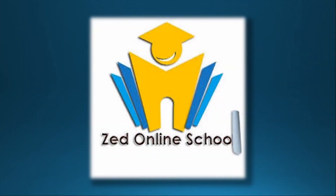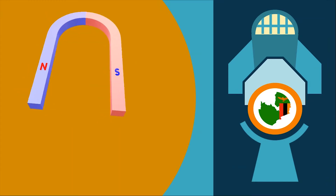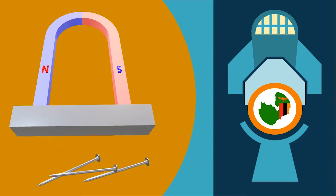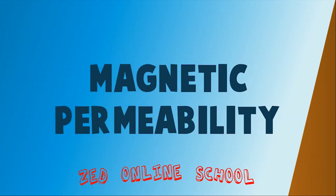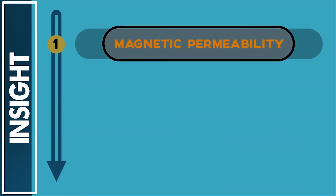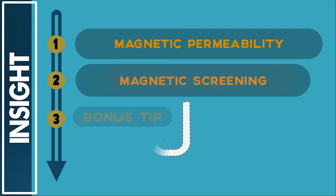Did you know that if certain materials are put in a magnetic field they can prevent other materials from getting attracted to the same magnetic field? This is Zed Online School and in this video we'll be looking at magnetic permeability. By the end of this video you should be able to know what magnetic permeability is, understand how magnetic permeability is used in magnetic screening, and at the end we've got a bonus tip so stay around.